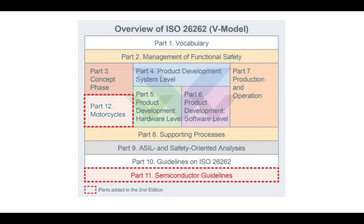An independent person must confirm your argumentation — this principle is mandatory to prevent misinterpretation and cheating. Parts 3 through 7 of ISO 26262 give guidance on different phases and disciplines, from the early concept stage to the end of life. Part 3 is the Concept Phase, Part 4 is Product Development at the System Level, Part 5 at the Hardware Level, Part 6 at the Software Level, and Part 7 covers Production, Operation, and Decommissioning. The structure follows the V-model of the system development life cycle.